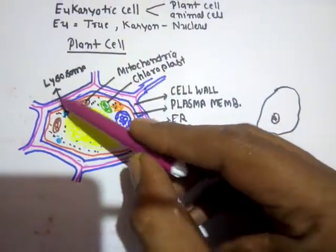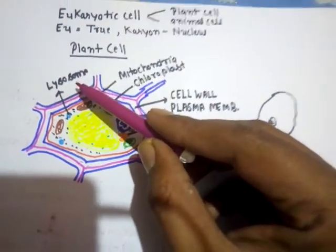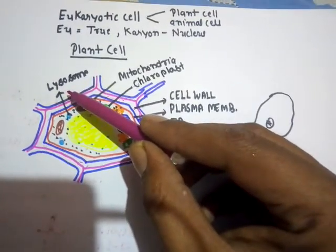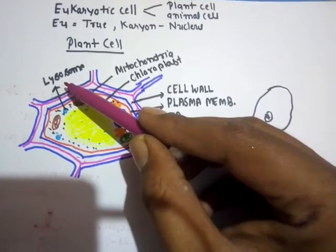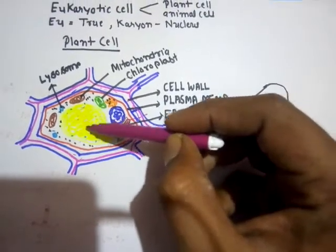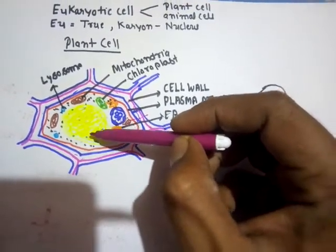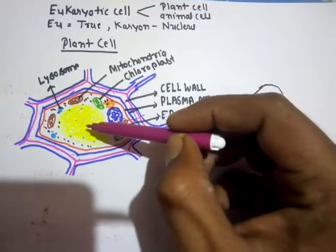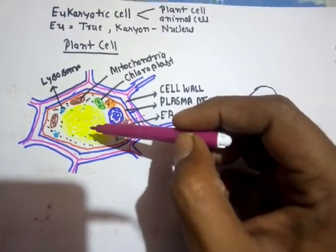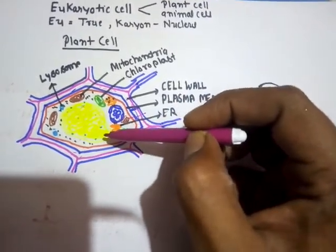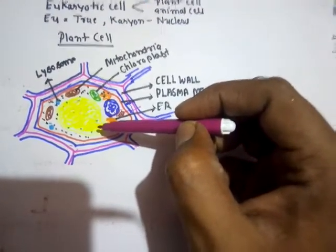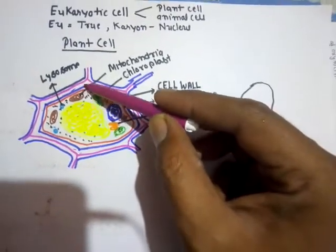Plant cells also have a membrane-bound organelle called lysosomes, though their number in plant cells is very small. They contain lytic enzymes, also called digestive enzymes. Lysosomes are known as 'suicidal bags' because if a cell has damage that cannot be recovered, all the lysosomes burst simultaneously, releasing digestive enzymes into the cytoplasm that digest the entire cell structure. This is how a cell uses lysosomes to destroy itself.